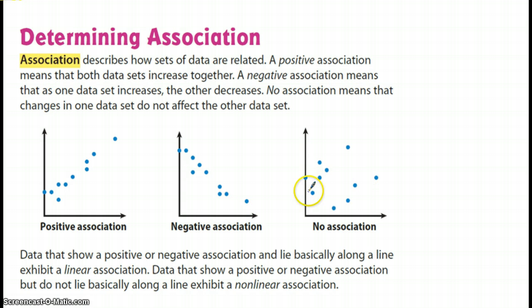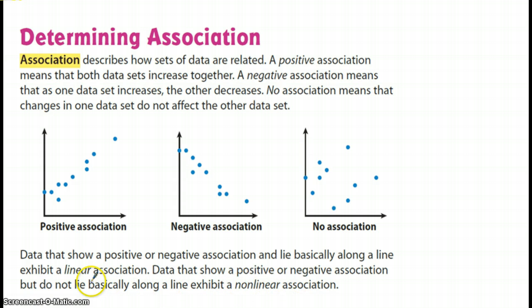And these are not clustered along a line. So if the data set lies basically along a line, we call it linear. And if the data shows a positive or negative association but does not lie along a line, we say it is nonlinear.